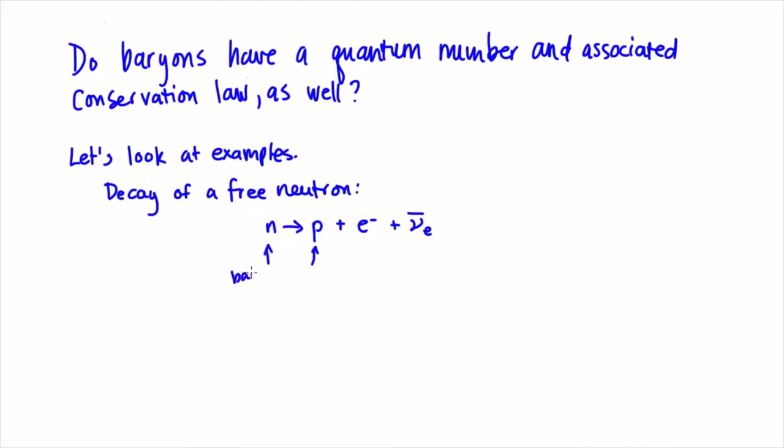You see a baryon, the neutron, on the left side, and another baryon, the proton, on the right side, plus the electron and its anti-neutrino on the right. This reaction is consistent with the baryon conservation law, because you have a baryon on the left side and a baryon on the right side, so that doesn't help us.